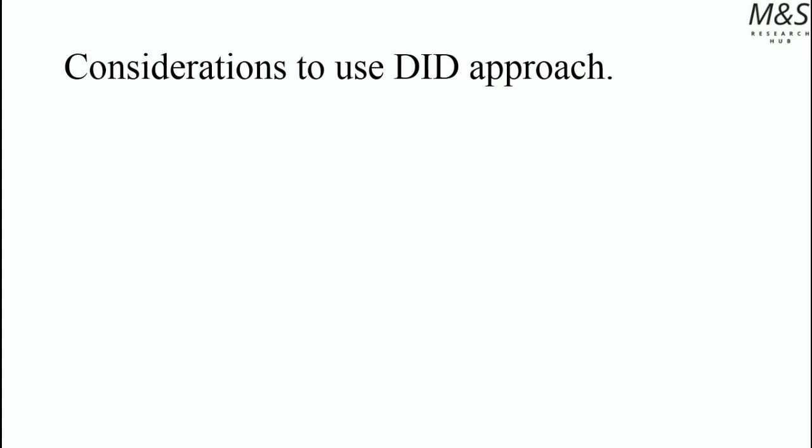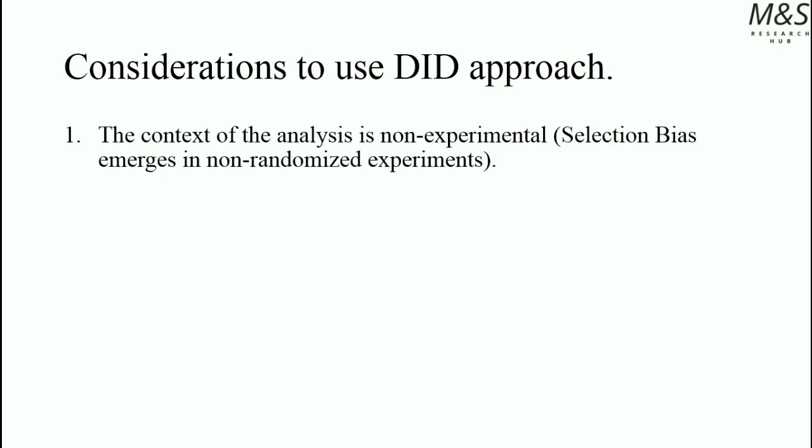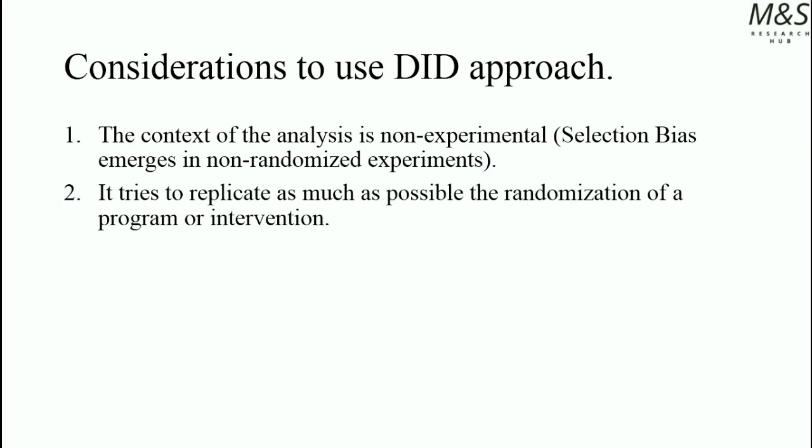Considerations to use the difference-in-difference approach. The context of the analysis is non-experimental, so selection bias emerges in this kind of experiment where it is not randomized. When we have randomized experiments, selection bias will not occur, but normally public programs are related to a situation where we want to change the welfare of a person or a population, so special characteristics emerge when introducing a treatment, inducing the selection bias problem. It tries to replicate as much as possible the randomization of a program or intervention in order to reduce the bias and spuriosity of the results.